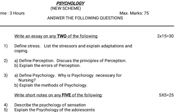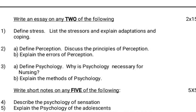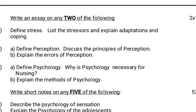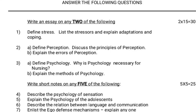Answer the following questions. Write an essay on any 2 of the following — 2 into 15 equals 30 marks. First question: define stress, list the stressors, and explain adaptations and coping.